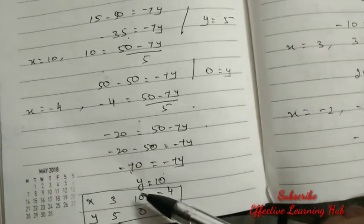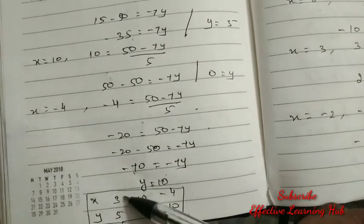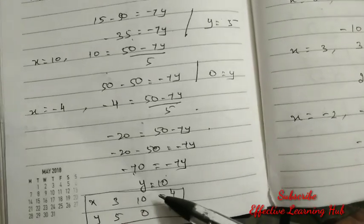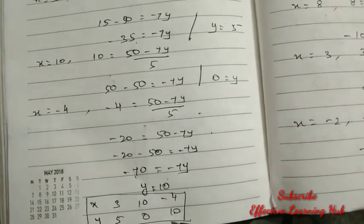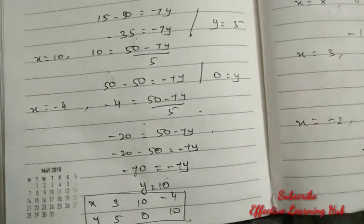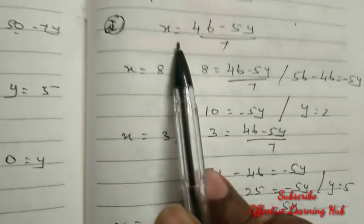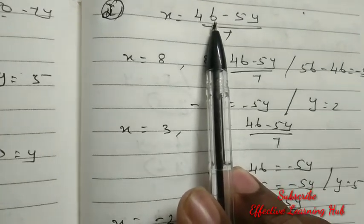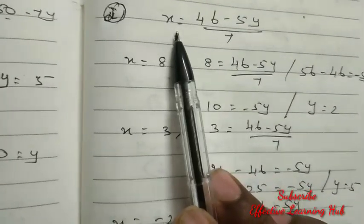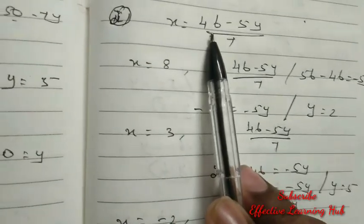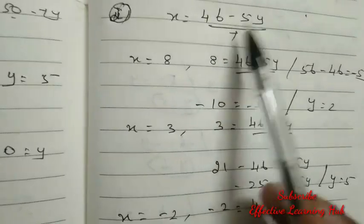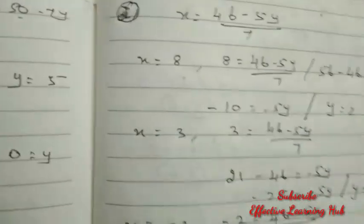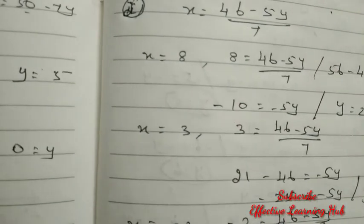So the points for equation 1: x equal to 3, y equal to 5; x equal to 10, y equal to 0; x equal to minus 4, y equal to 10. Now see the second equation: 7x plus 5y equal to 46. So 7x equal to 46 minus 5y, giving x equal to (46 minus 5y) divided by 7.